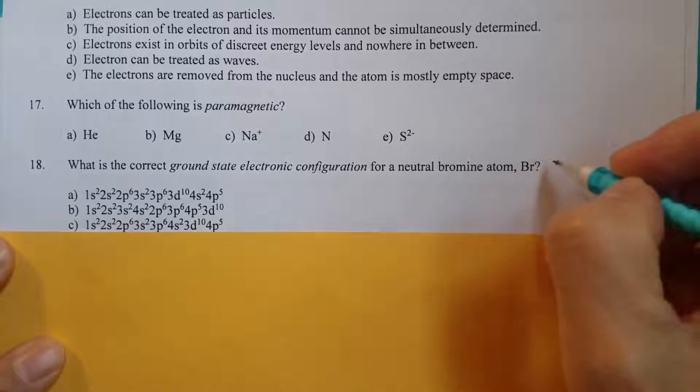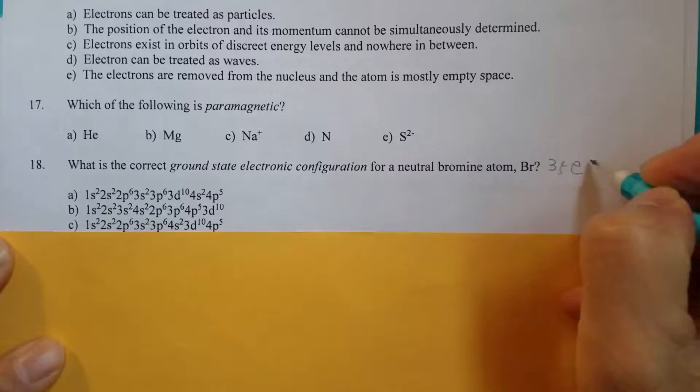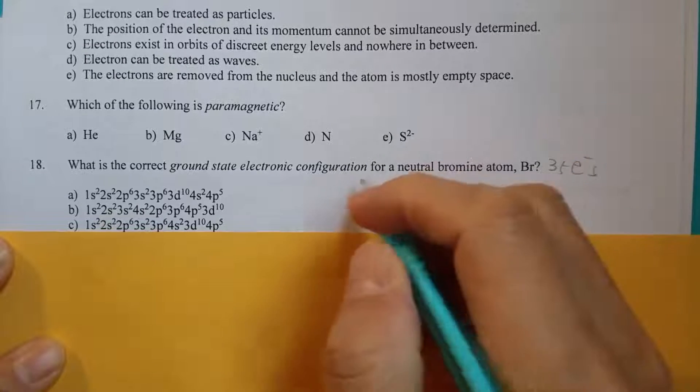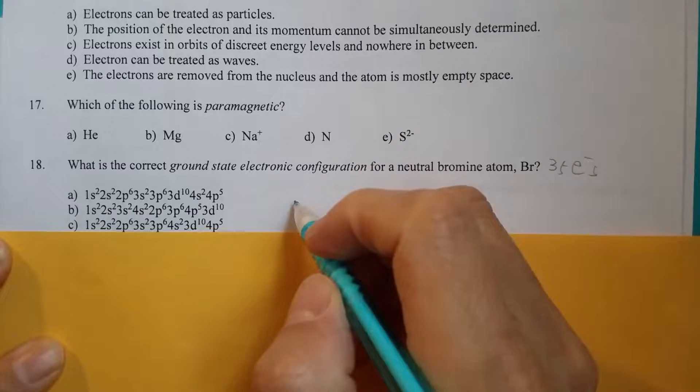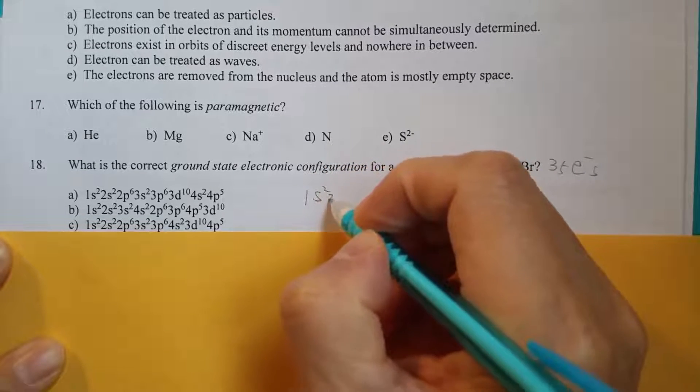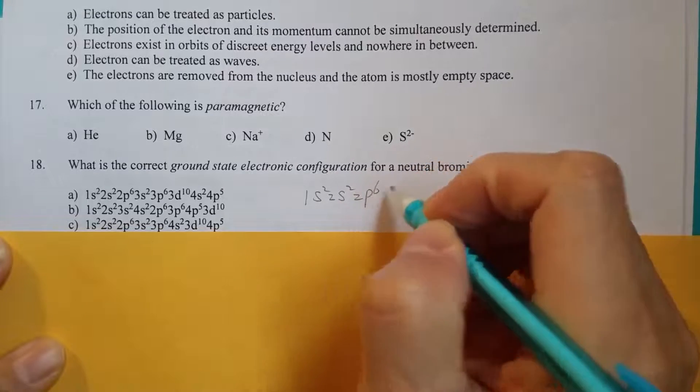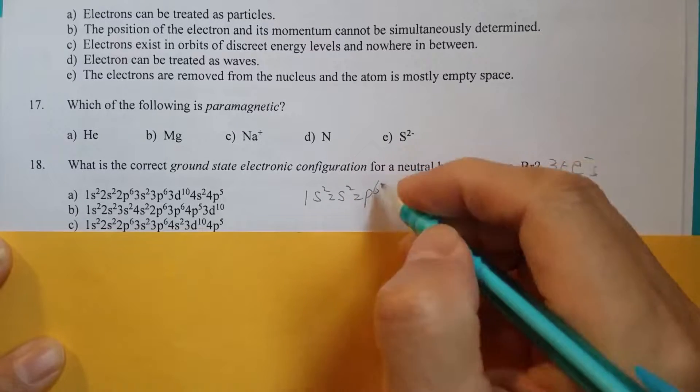So now we know bromine has 35 electrons. So following the Aufbau principle, we start with 1s2, 2s2, 2p6. So far, 10 electrons are assigned.